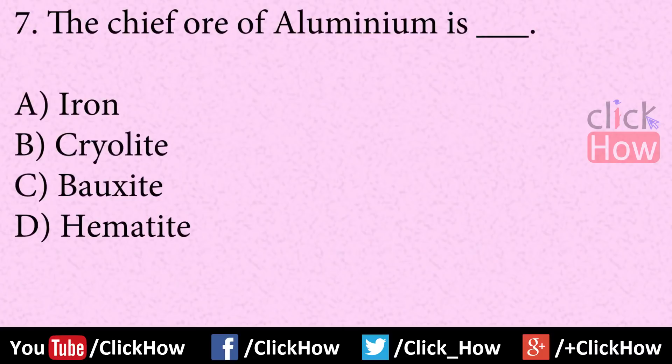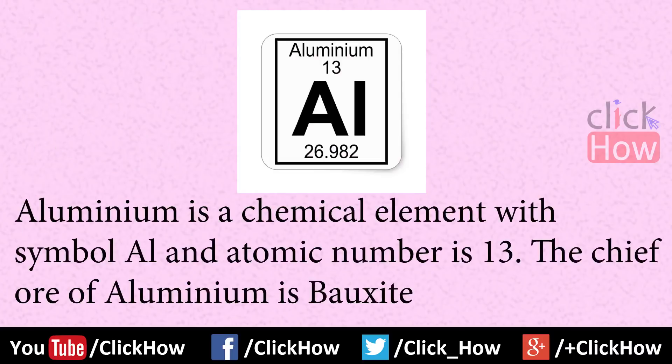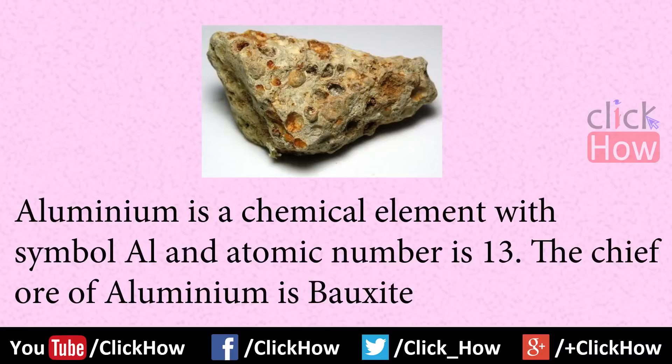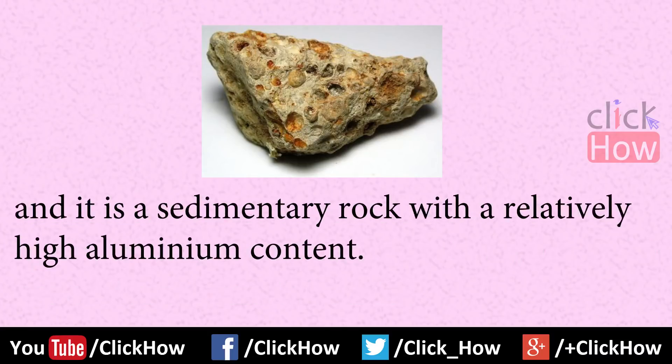Question number 7: The ore of aluminum is? Answer is option C, Bauxite. Aluminum is a chemical element with symbol Al and atomic number 13. The ore of aluminum is bauxite, which is a sedimentary rock with relatively high aluminum content.